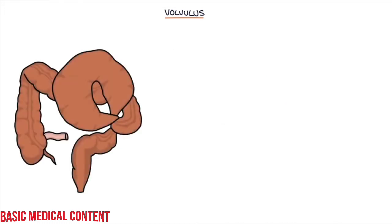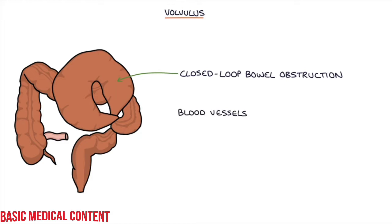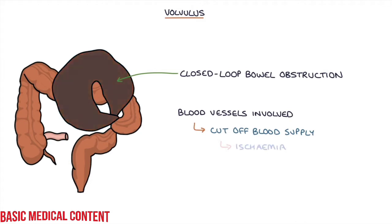Twisting in the bowel leads to a closed loop bowel obstruction where a section of the bowel is isolated by the obstruction on either side. The blood vessels that supply the bowel can be involved, cutting off the blood supply to the bowel which leads to bowel ischemia. Ischemia leads to death of the bowel tissue, which is called necrosis, and eventually bowel perforation.